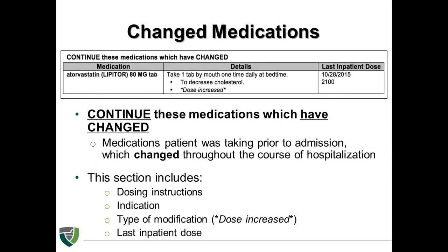The 'continue this medication which have changed' section is the second part of the discharge medication list. This section will provide information about medications that the patient was taking prior to hospital admission but have been modified during the hospitalization. The details column also provides dosing instructions and indication along with information as to why the change in medication occurred. For the example on the slide, atorvastatin's dose was increased to 80 mg to decrease cholesterol levels. The community pharmacy should use this section to deactivate any previous medication with previous directions of these changed medications that may be active in the system.